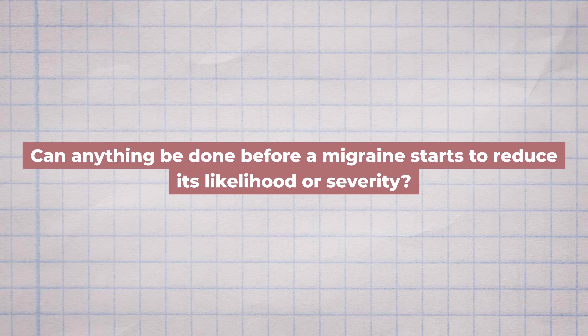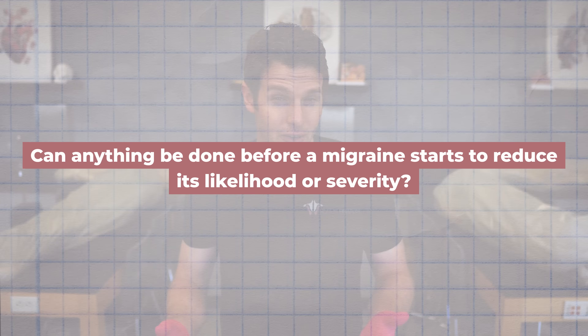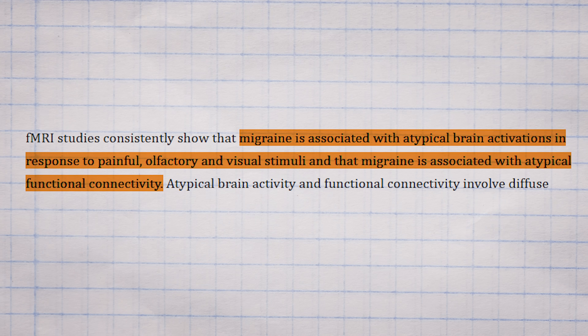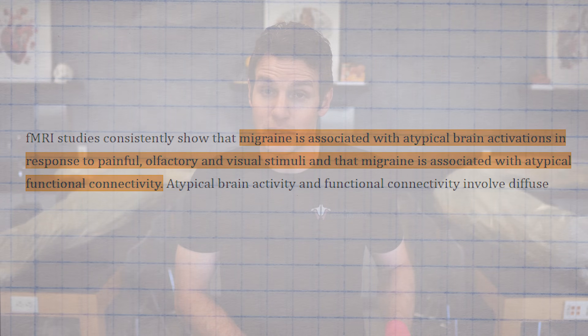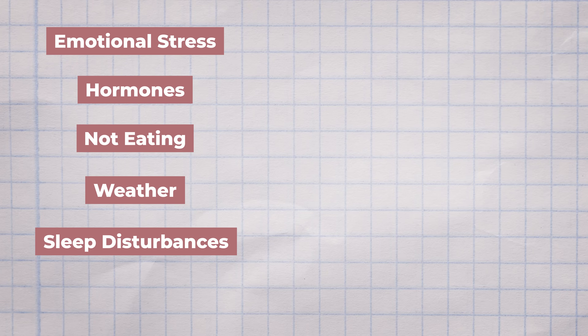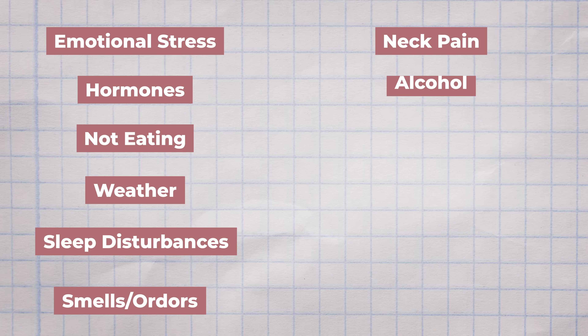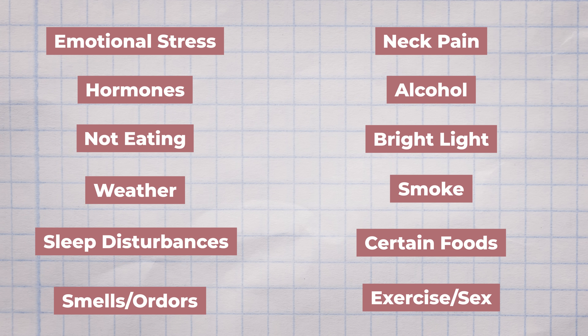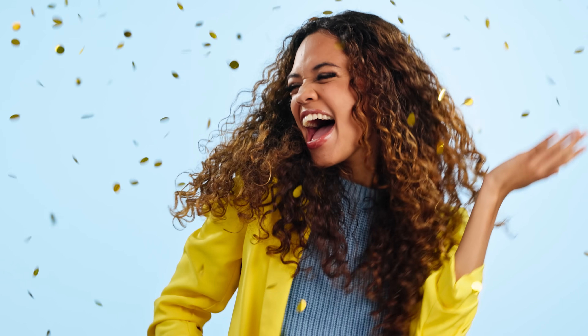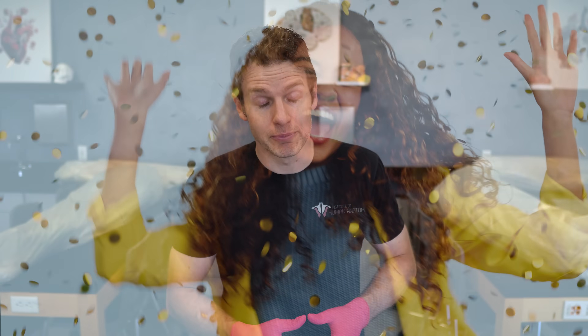Is there anything a person could do during the premonitory phase or before that could influence their risk of getting a migraine? The answer is yes. The data have shown that people with migraines tend to have brains that are a little bit more sensitive to certain stimuli. A whole list of potential migraine triggers has been gathered, including emotional stress, hormones, not eating, weather, sleep disturbances, certain smells or odors, neck pain, alcohol, bright lights, smoke, certain types of food, exercise, and even sexual activity. That last one was admittedly kind of a bummer, but luckily that list is from most common to least common — only 5% of people reported that sex was a possible trigger.